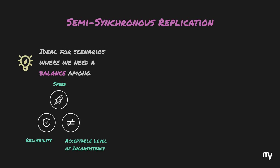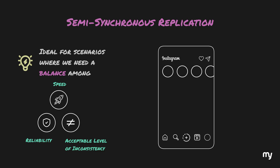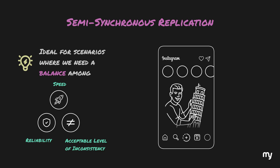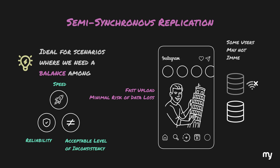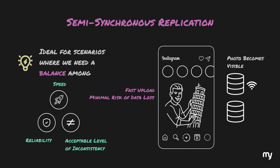This replication strategy is ideal for scenarios where we need a balance between speed, reliability, and an acceptable level of inconsistency. While it may not be suitable for banking or financial applications, it's a good fit for systems like Instagram or other social media platforms. Imagine you upload a photo on Instagram — with semi-synchronous replication, your photo upload is fast, the risk of data loss is minimized, but if one read replica is down, some users might not immediately see your photo. As the system eventually catches up, your photo becomes visible to everyone — an acceptable trade-off.